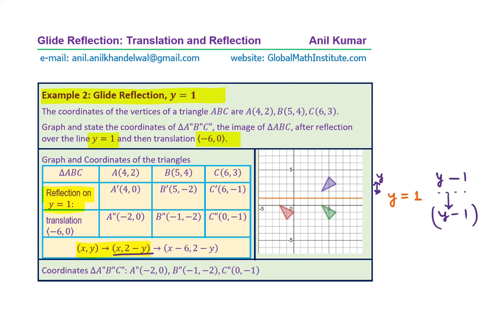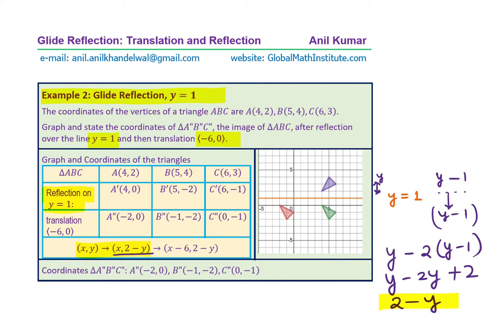So the point which was some y value, y minus 1 above the line, goes y minus 1 below after reflection on y equals 1. The net change is 2, and from the y value it changes to 2 minus y. So we get the net y value as 2 minus y. If it was y equals k, it will be 2k minus y. I hope the concept is clear.